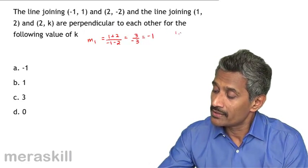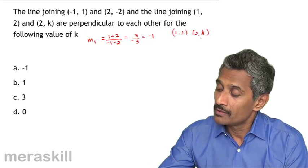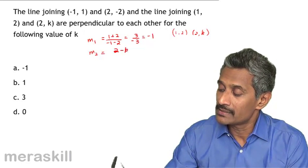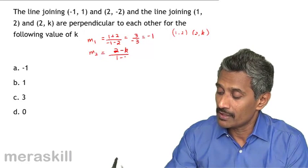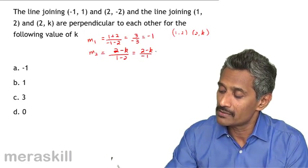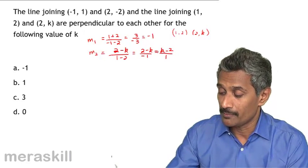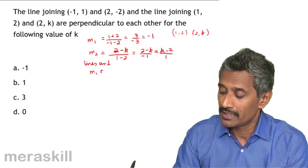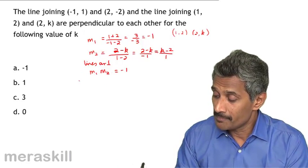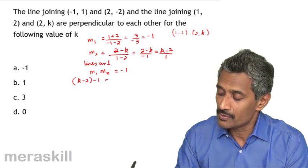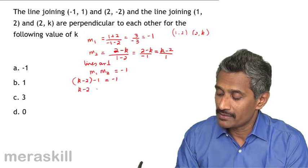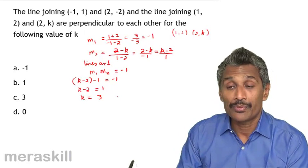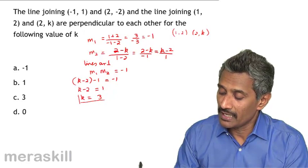For the second line through 1 comma 2 and 2 comma k, the slope is 2 minus k upon 1 minus 2, which gives 2 minus k upon minus 1, or equivalently k minus 2. Since the lines are perpendicular, m1 times m2 equals minus 1. So minus 1 times k minus 2 equals minus 1, which means k minus 2 equals 1, therefore k equals 3.